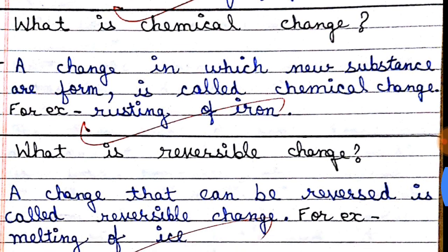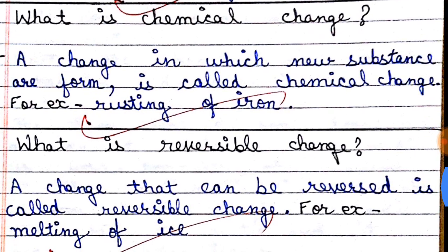Next question: what is a chemical change? A change in which new substances are formed is called a chemical change. For example, rusting of iron — when iron rusts, it becomes a new substance. Another example is curdling of milk — when milk curdles, it becomes a new substance like curd. That is why these are called chemical changes.